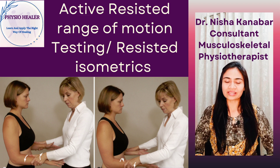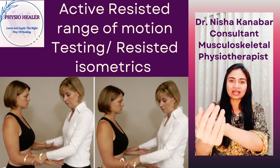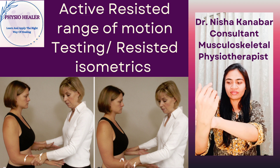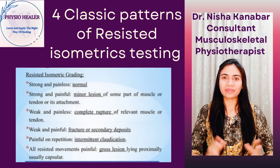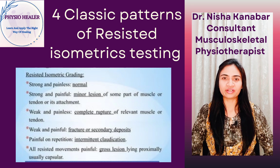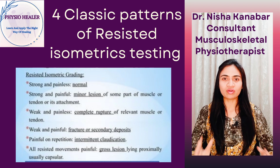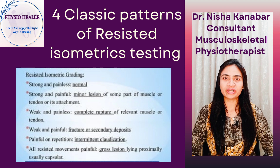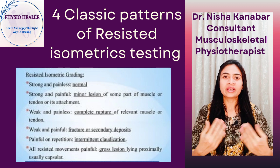For example, to check resisted isometrics of the biceps muscle, the elbow is placed at mid-range in the resting position and the patient is asked to bend the elbow while the therapist resists the movement. There are four classic patterns of resisted range of motion results: strong and pain-free indicates no likely lesion on contractile tissue; strong and painful may indicate a local lesion such as muscle strain or tendonitis; weak and pain-free indicates full rupture of a muscle or lack of nerve supply integrity; weak and painful indicates a severe lesion such as dislocation or fracture.